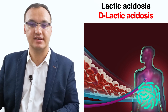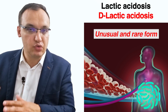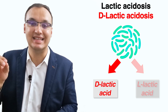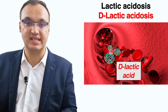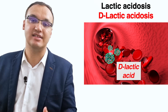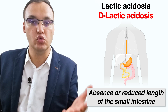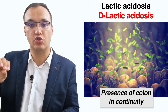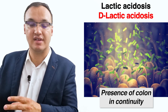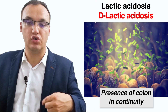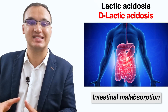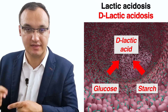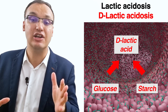D-lactic acidosis is an unusual and rare form of lactic acidosis. There are two kinds of lactic acid: D-lactic acid and L-lactic acid. Bacteria often produce D-lactic acid, which humans metabolize very slowly, so it persists in the blood circulation. The production of D-lactate in the gut is caused by two factors: the absence or reduced length of the small intestine, which normally absorbs most simple carbohydrates, and the presence of the colon in continuity, where unabsorbed carbohydrates serve as a substrate for fermentation by colonic bacterial flora.